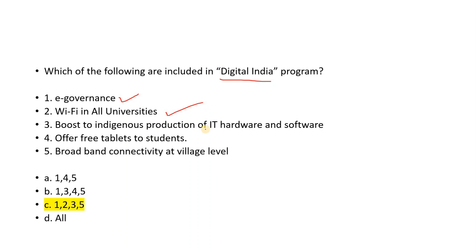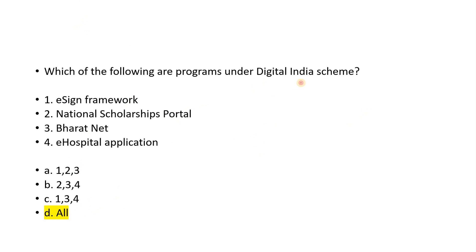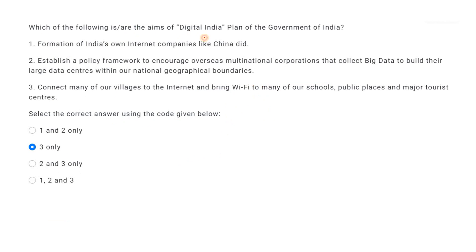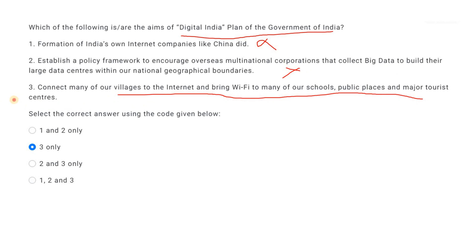Digital India initiatives also include e-Sign framework, National Scholarship Portal, and BharatNet. A practice question asks: which of the following are aims of the Digital India Plan? The correct aims include connecting many villages to the internet, and bringing Wi-Fi to schools, public places, major tourist centers — these are the correct answers.